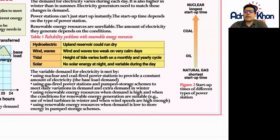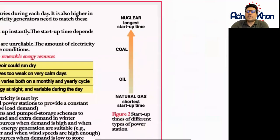If you look at this particular diagram on the right hand side, this shows us the start-up times of different types of power stations. The shortest start-up time is for a gas-fired power station and the longest start-up time is for a nuclear power station and also a coal-fired power station as well.